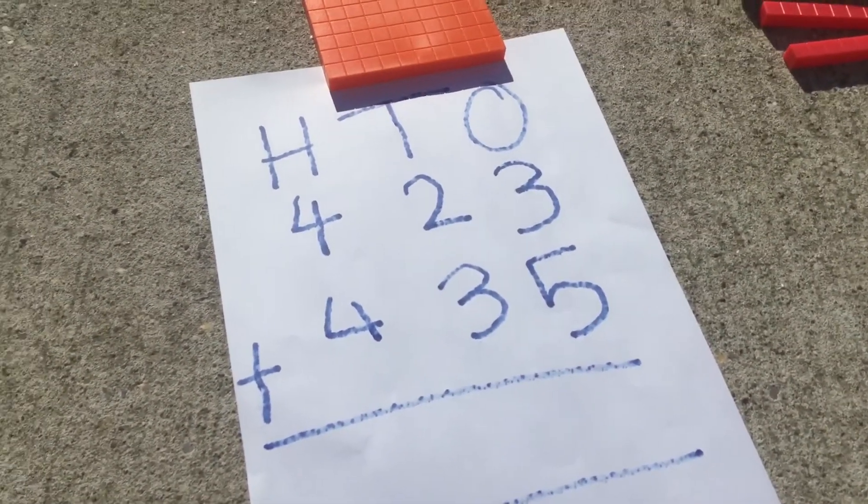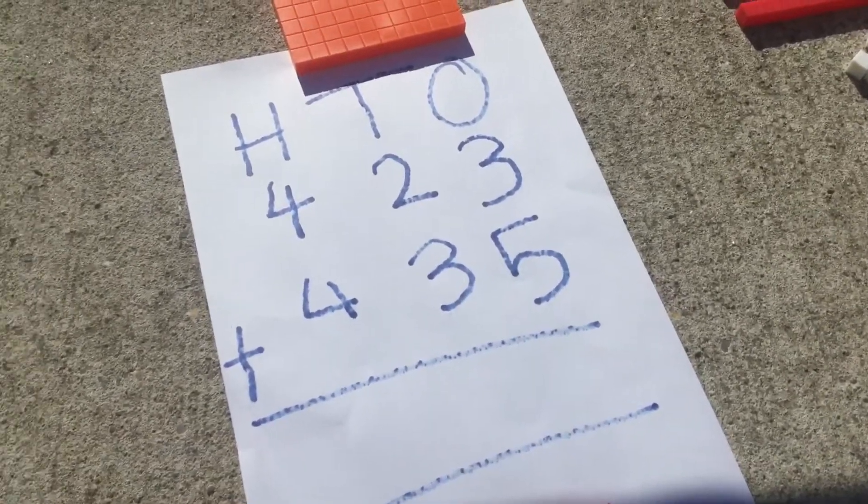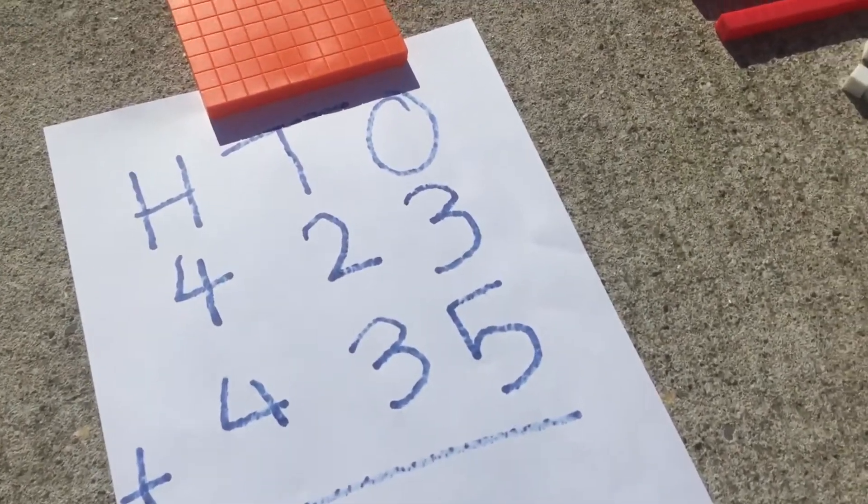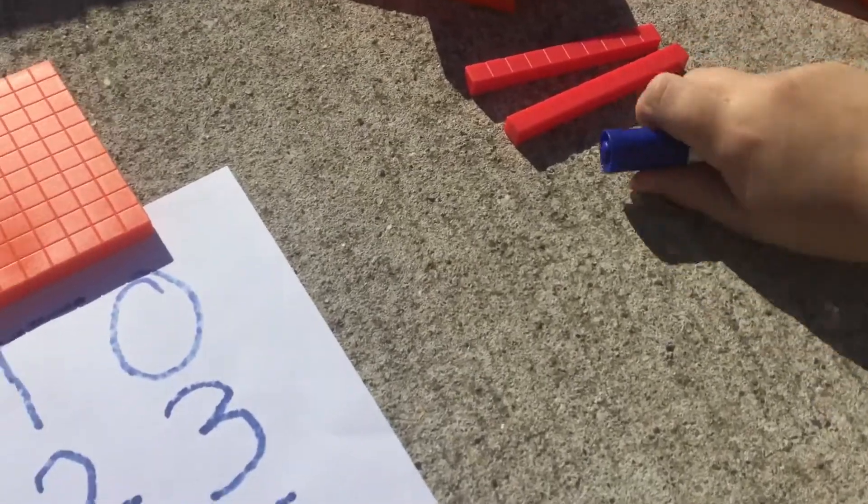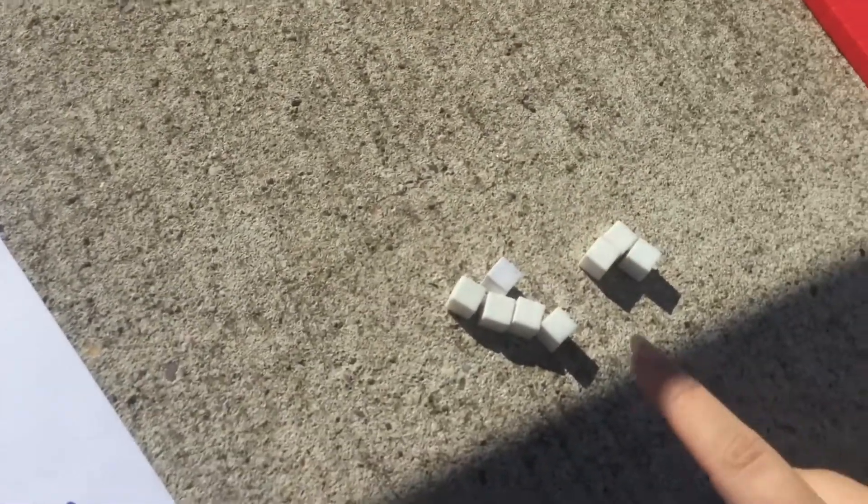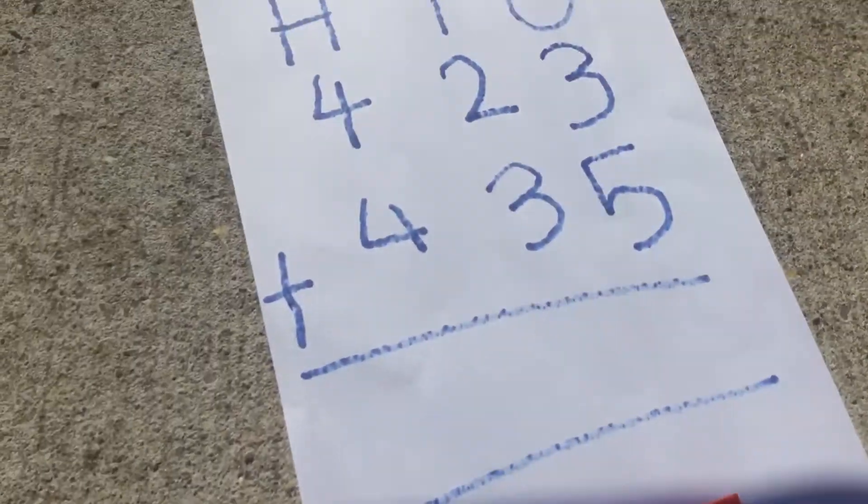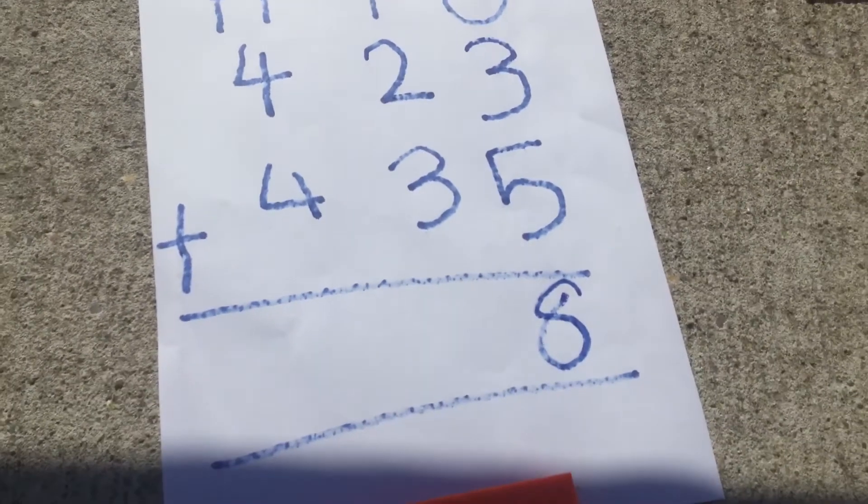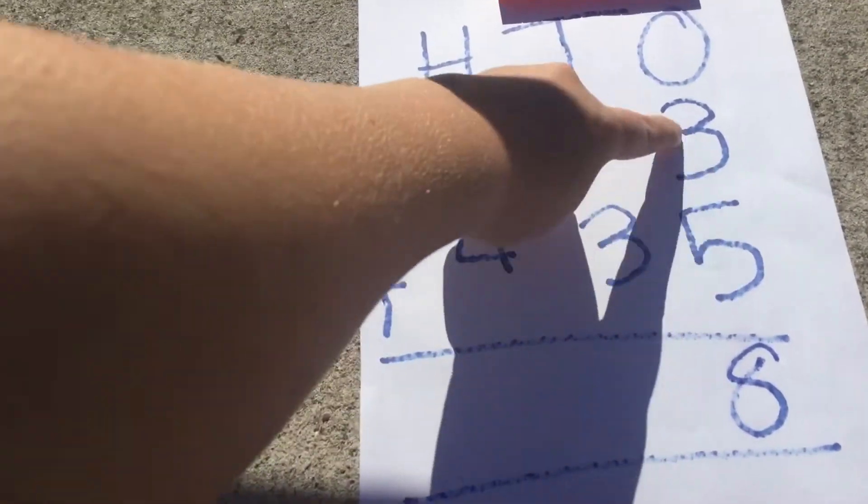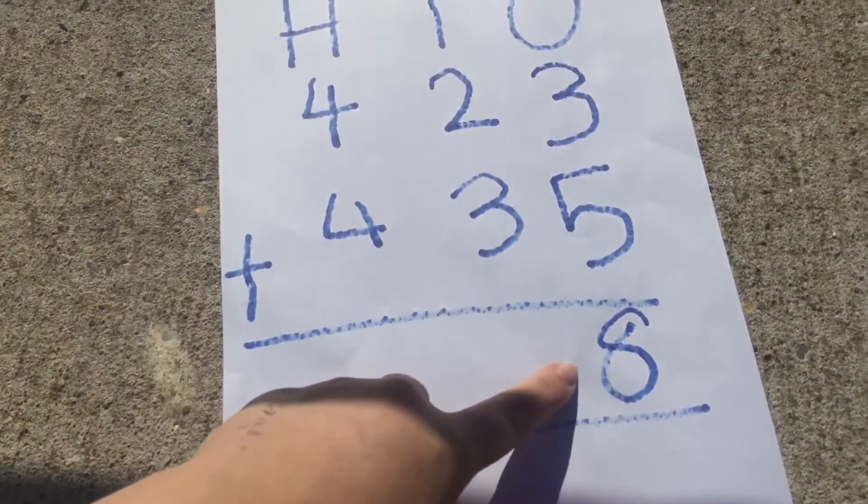Now I need to add them together. When adding, I always start in the ones column. So let's put them together. 1, 2, 3, 4, 5, 6, 7, 8. I have 8 now. So I put that in the ones column. 5 add 3 equals 8.